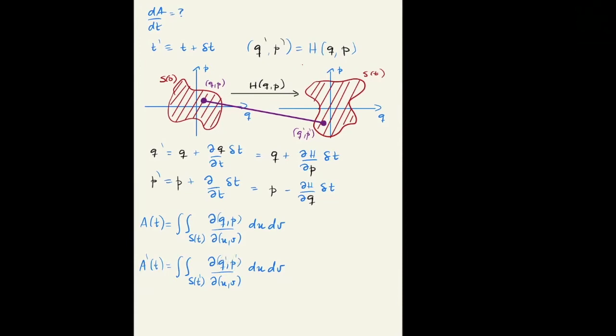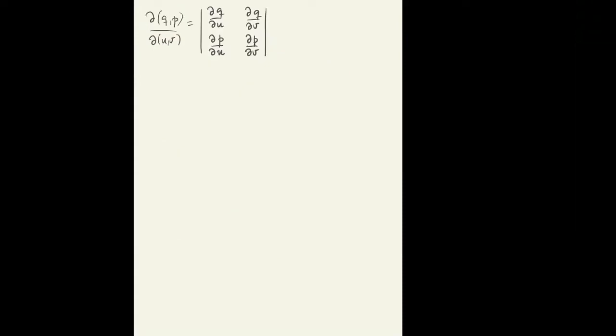So let's calculate the Jacobian. The Jacobian is the determinant of the matrix of the derivatives, which equals ∂Q/∂U ∂P/∂V minus ∂P/∂U ∂Q/∂V. If we use now the coordinates Q prime and P prime, then this is the same but with the primes.